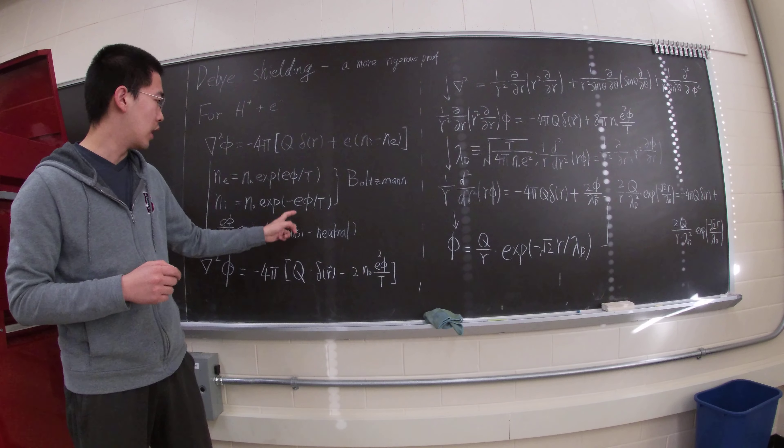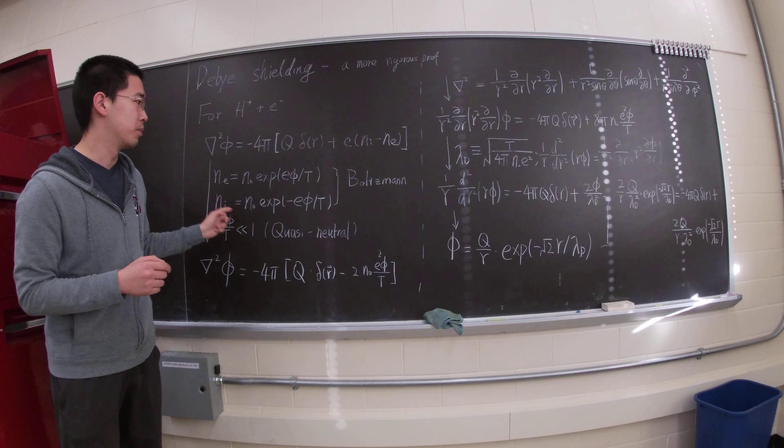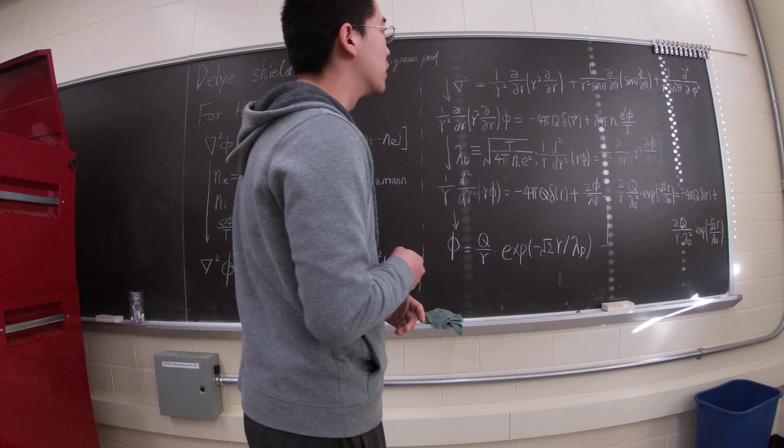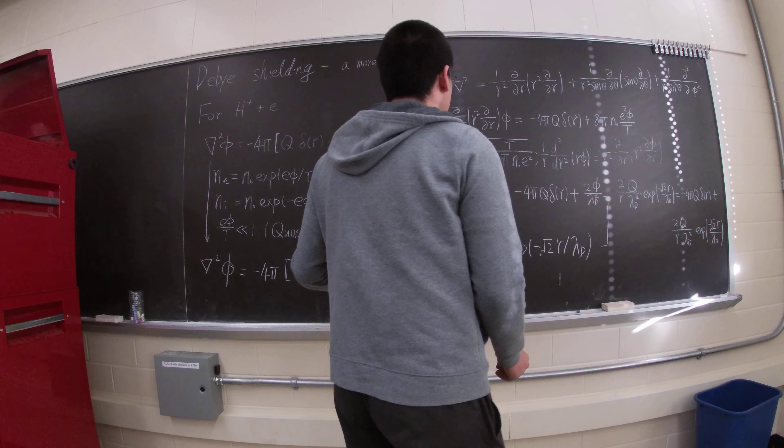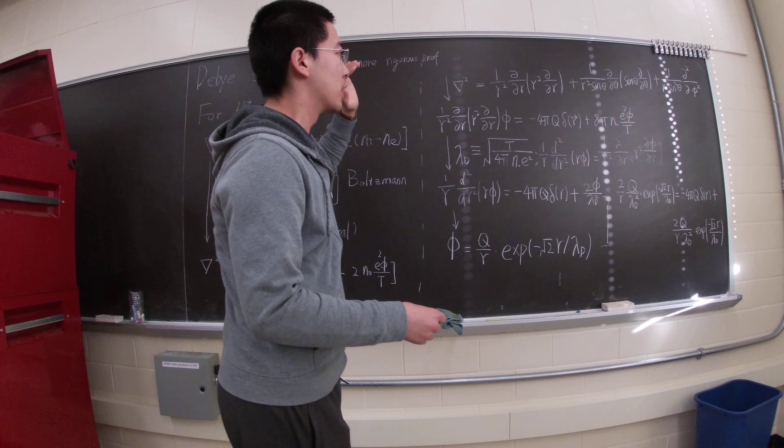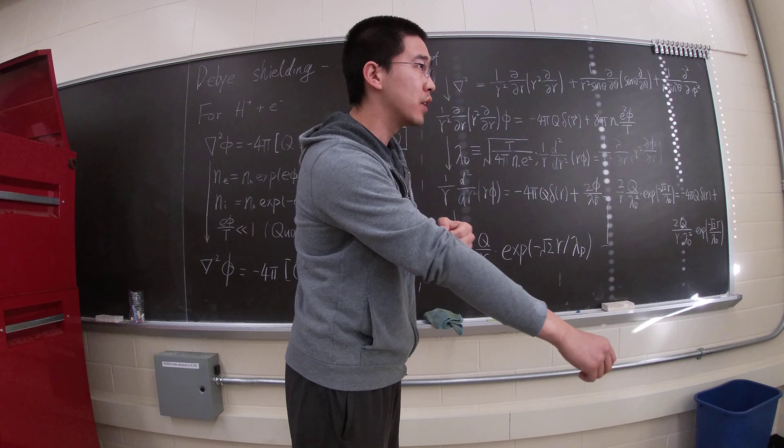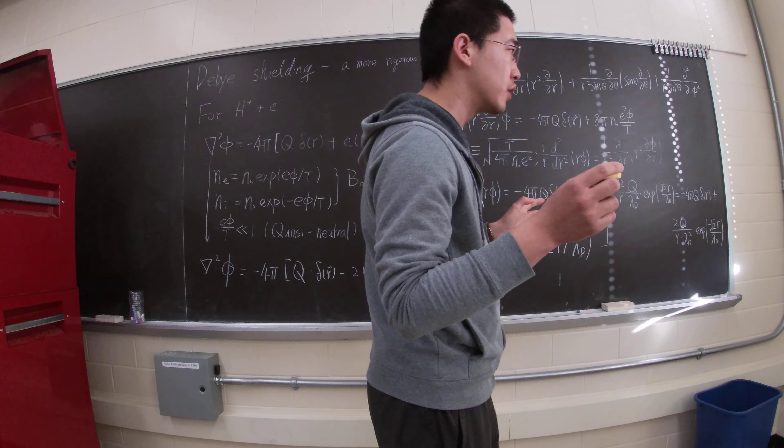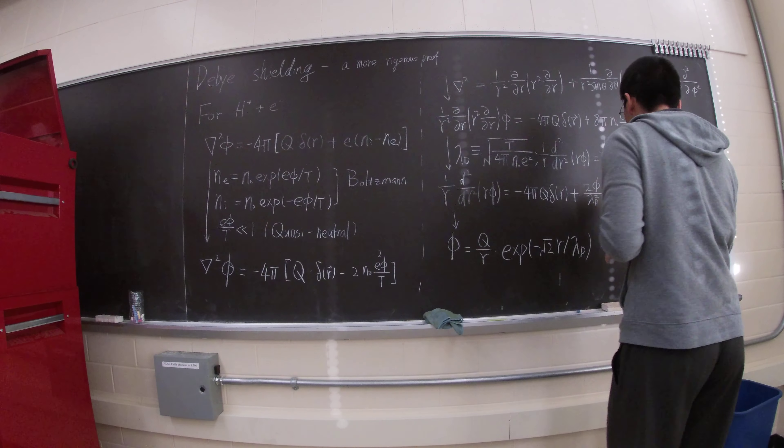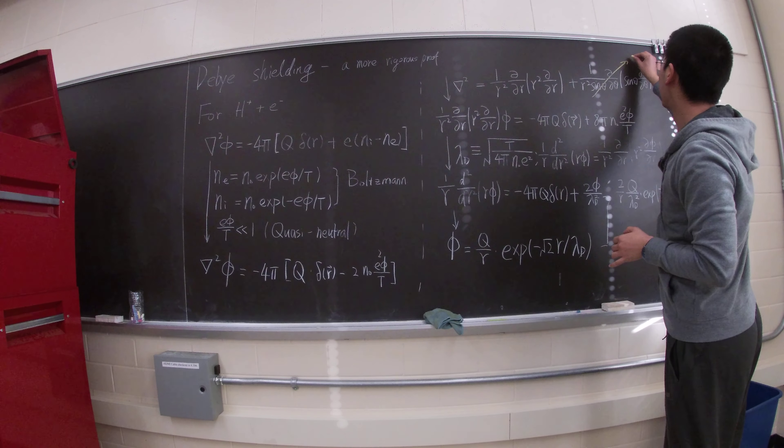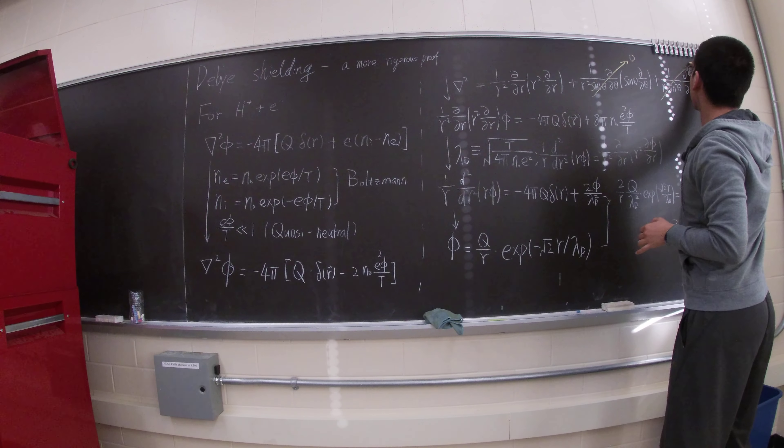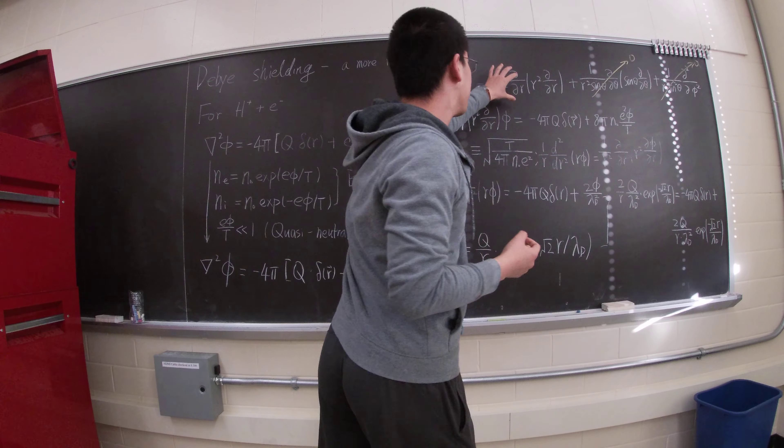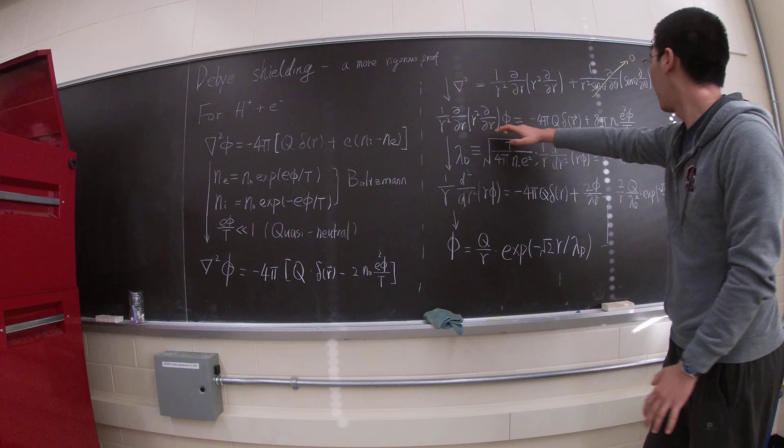Adding to the Boltzmann distribution with the assumption of quasi-neutrality. And then we take the spherical coordinate, and we assume the whole distribution is spherically symmetric. So, there is no phi or theta dependence. So, those two terms become zero. We don't have this term, plug it back in here, we end up having this expression.